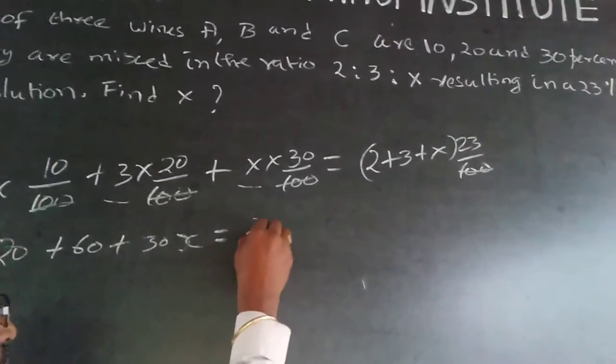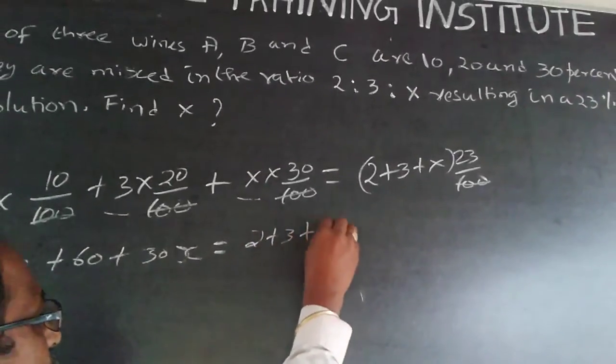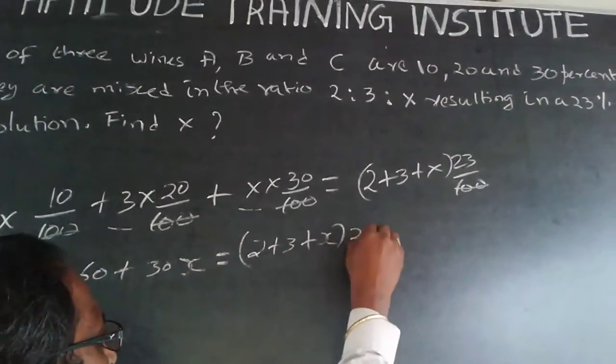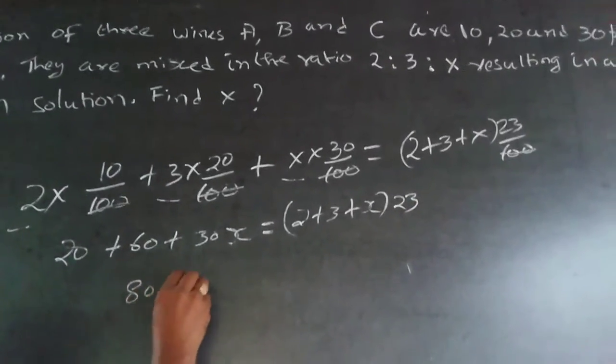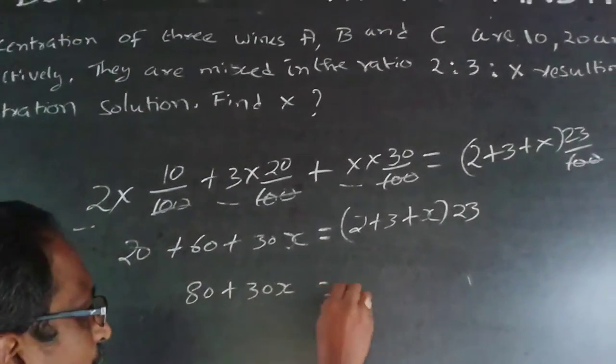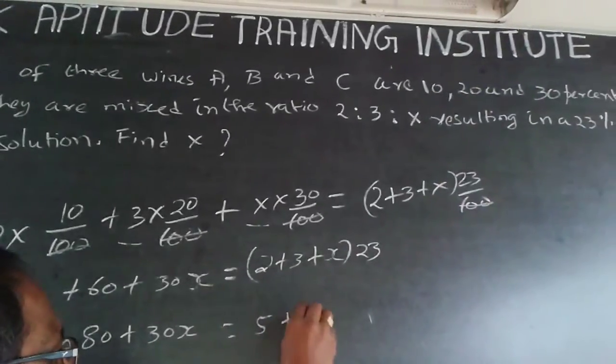Here it will be equal to (2+3+x)×23, or 80+30x will be equal to (5+x)×23.